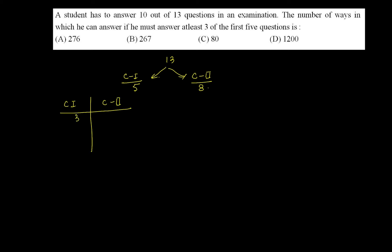If we attempt 3 from category 1, then we have to take 7 from category 2. If we attempt 4 from category 1, then we have to take 6 from category 2.